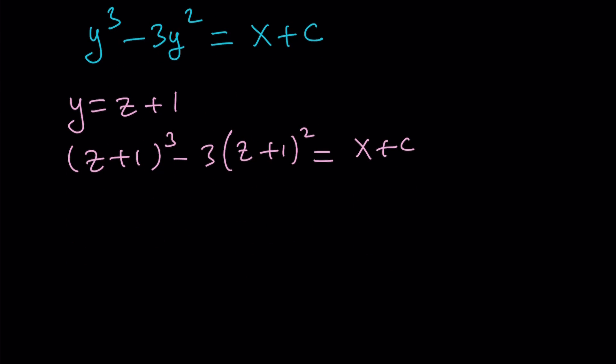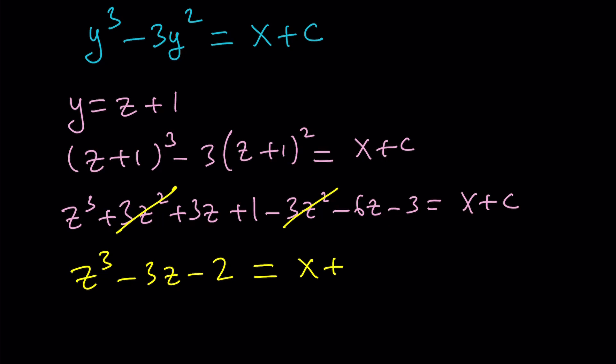That's going to give us z plus 1 cubed minus 3 times z plus 1 squared equals x plus c. And then let's go ahead and expand it. z cubed plus 3z squared plus 3z plus 1 minus 3z squared minus 6z minus 3 equals x plus c. Now, z squared, as you see, cancels out. And we end up with z to the third power minus 3z minus 2 equals x plus c.